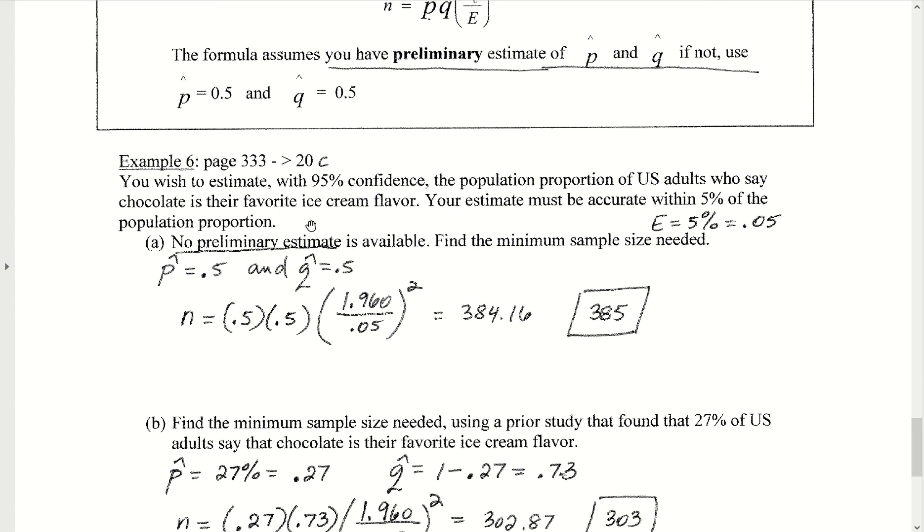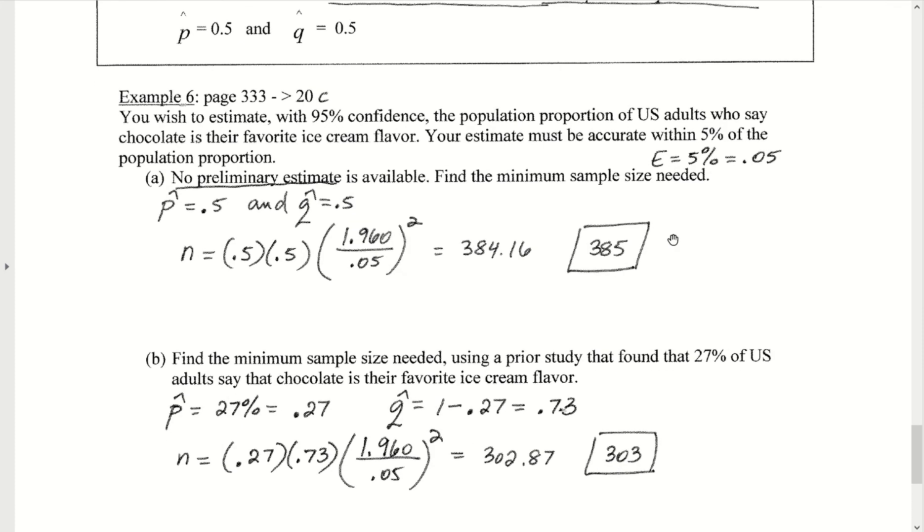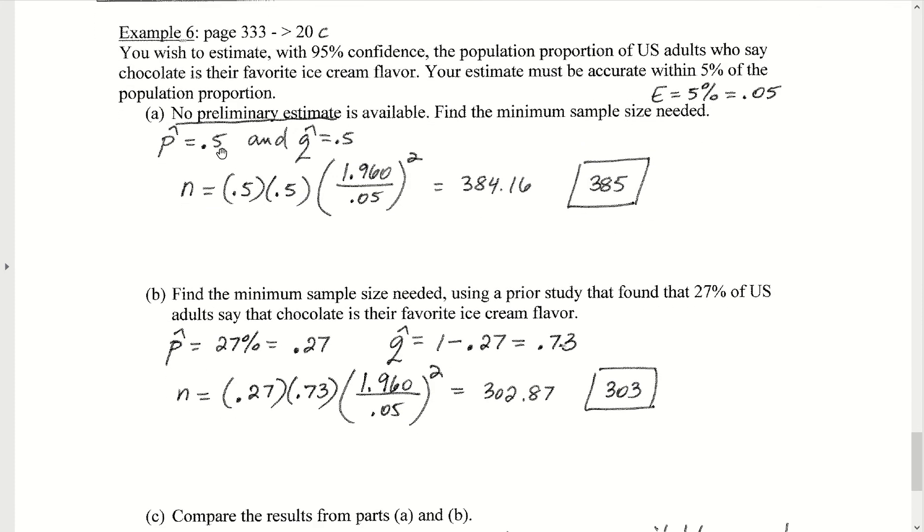Let's take a look at example 6. Suppose we wish to estimate with 95% confidence the population proportion of U.S. adults who say that chocolate is their favorite ice cream. We want our estimate to be accurate within 5%, so in a roundabout way they're trying to tell us that the margin of error is 5%, which is 0.05, of the population proportion, and suppose that no preliminary estimate is available, find the minimal sample size needed. Well, if no preliminary estimate is available, then that's precisely when we use p-hat and q-hat equal to 0.5.